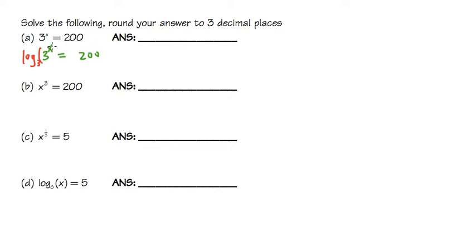So it will look like this — log base 3 on both sides. The reason is because the log base 3 and the 3 in the base, when the bases are the same, they will cancel each other out. And then we can get x, which is equal to log base 3 of 200.